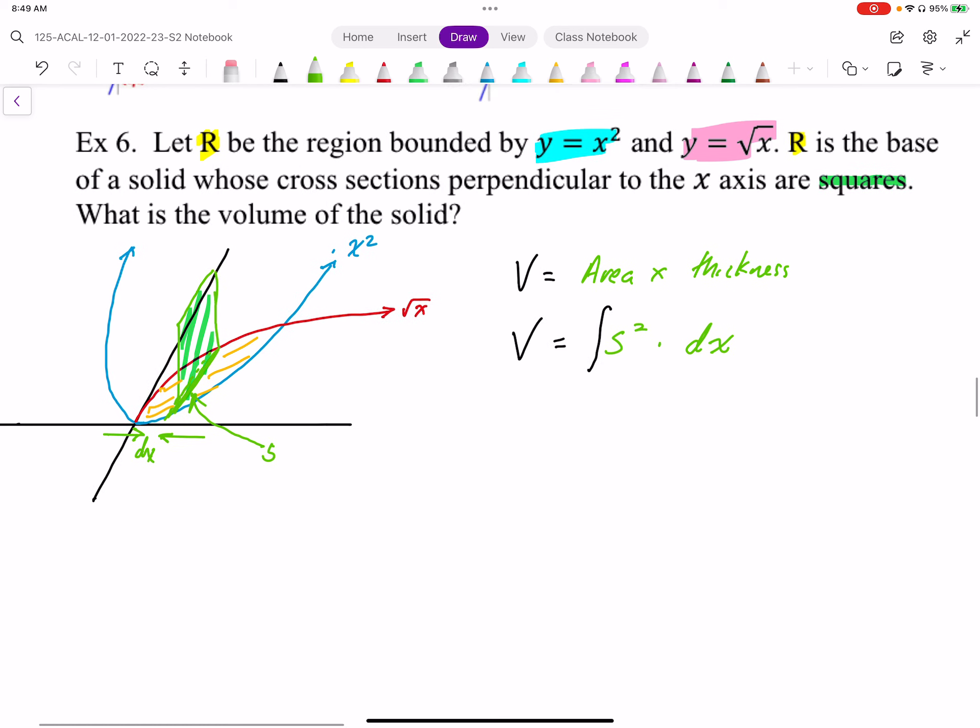We're going to generate s, the value of s is going to be calculated by the square root of x, the upper function, minus the lower function, which is x squared. So that's going to be our s. I'm going to replace that in my expression, the integral.